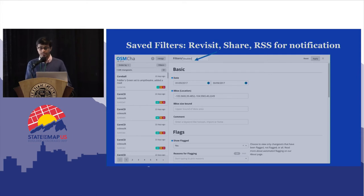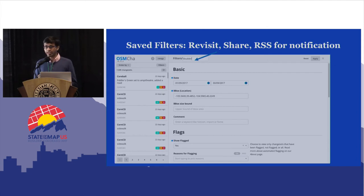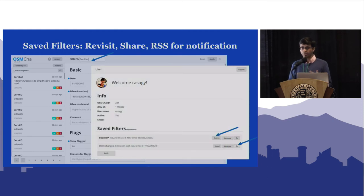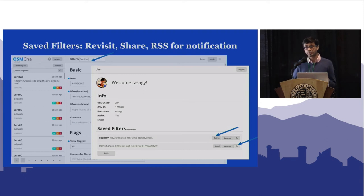Other things we heard and added: the ability to save filters. You can set a date, set a bounding box like Boulder, look at any flagged changeset, and save it as a filter called 'Boulder' — which shows up in your user panel and can be shared with anyone. So if you're doing a community mapping party in Boulder, you just share a single link and everyone gets the same OSM-Char instance. There's also an RSS feed, meaning instead of getting notified about every possible change, you can watch for specific types of changes and get notified as soon as they happen.